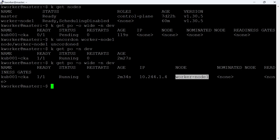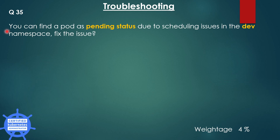Let's go to the next question. The next question has no changes from the previous one, but the answer is different. The question is: you can find a pod in the dev namespace in pending status due to scheduling issues, and you have to find the issue and fix it.